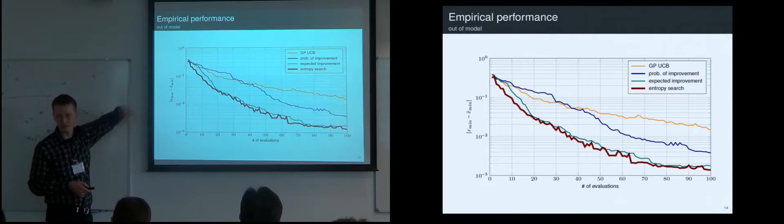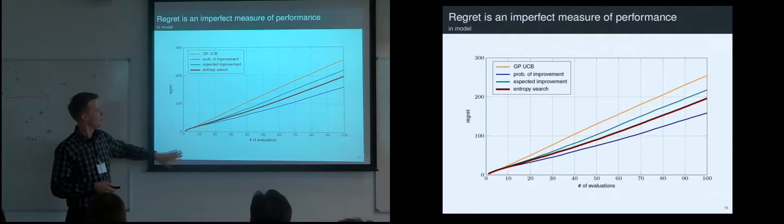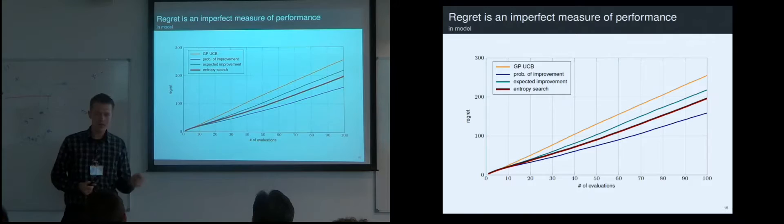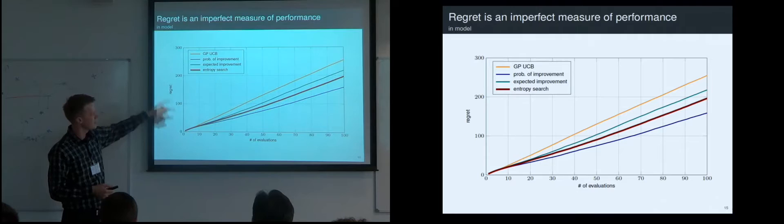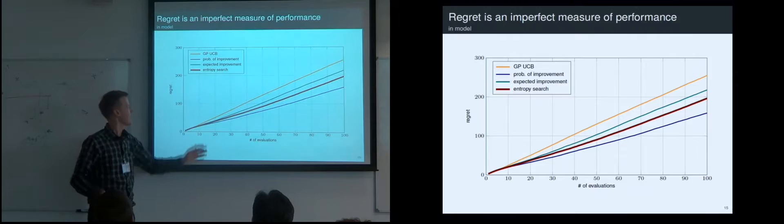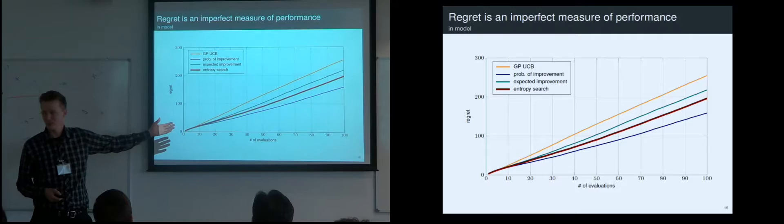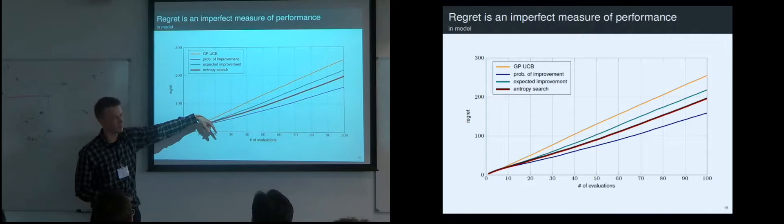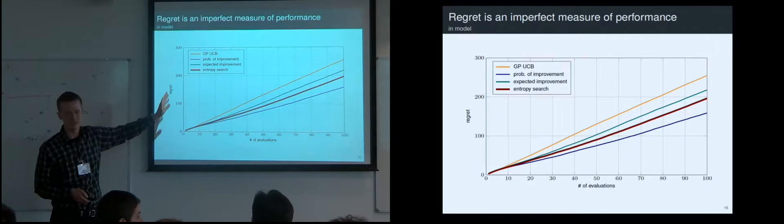Here's an interesting plot showing cumulative regret — the true function is a draw from the correct Gaussian process, and we sum up the function values collected. This algorithm is of course not going to be the best one for regret, because it's not trying to collect low function values — it's prototyping. As it happens, PI is the best method for this particular experiment, and GP-UCB is the worst even though that's the only one of the four with an actual theoretical guarantee on a regret bound.